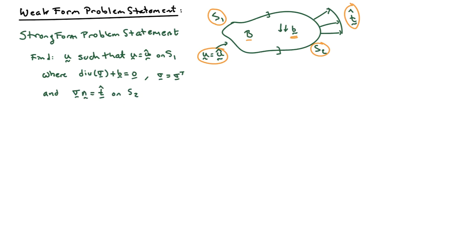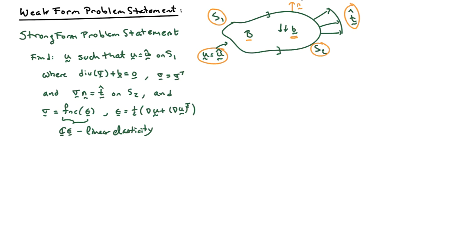The stresses acting on the normal vector on S2 are equal to t-hat. Further, the stresses are a function of the strain, and the strain is simply the symmetric gradient of the displacement field u — in the classical small deformation setting. If it's linear elasticity, this function is just the rank-four elastic modulus tensor C acting on epsilon.